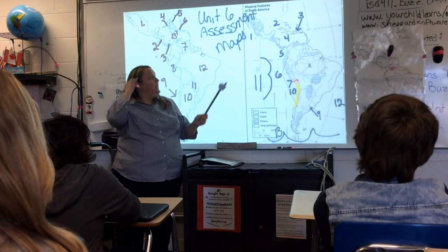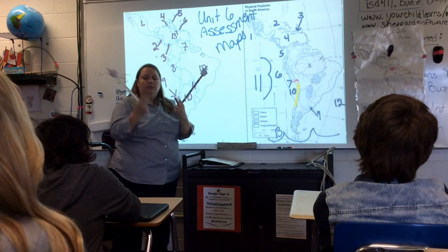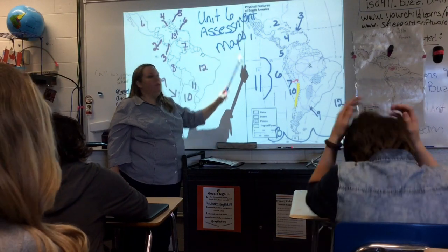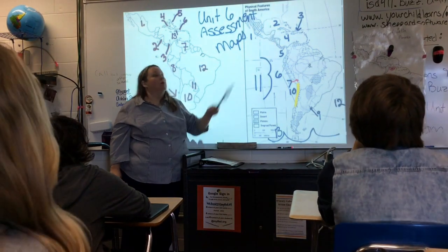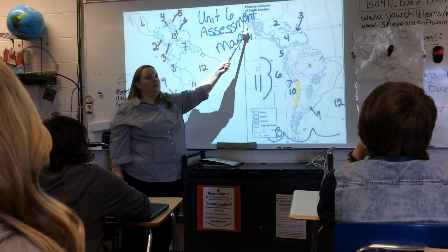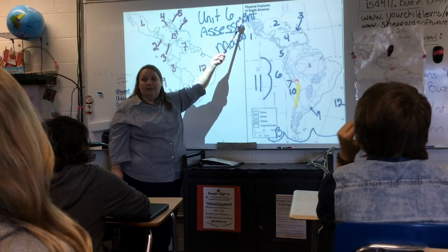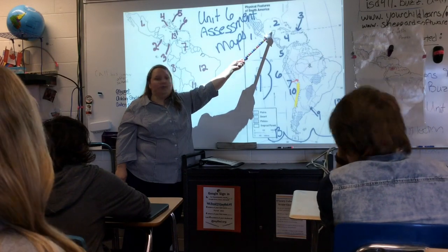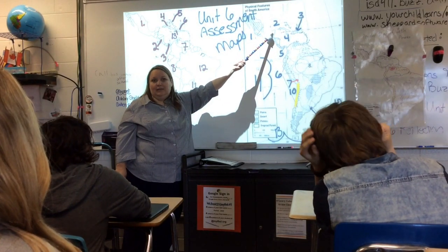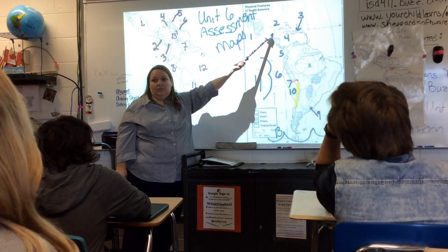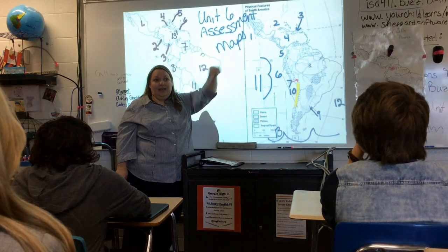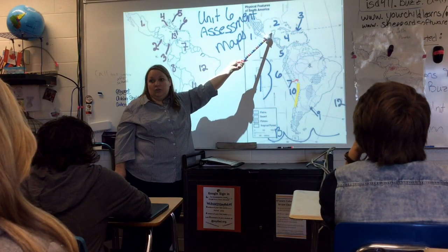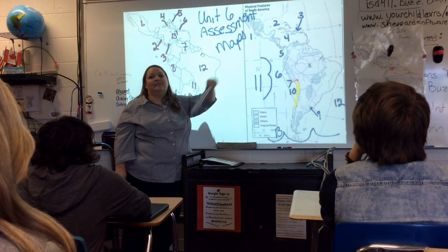Mexico has two peninsulas. We have one on the west side and one on the east side. On our west coast we have the peninsula called Baja California. Our east coast peninsula is the Yucatan Peninsula.